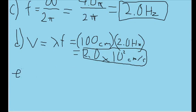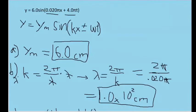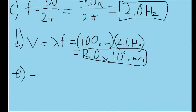Part E asks us to find the direction of the propagation of the wave. This is pretty simple because the propagation of the wave is directed in the direction opposite to the sign on the angular frequency. In the standard wave formula, there is a plus or minus symbol, because whether this is plus or minus is directly relevant to the behavior of the wave. If it's a plus sign, the wave propagates to the left in the negative direction; if it's negative, the wave propagates to the right in the positive direction. In the formula we're given there's a plus symbol, meaning our wave is propagating in the negative x direction.